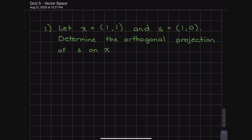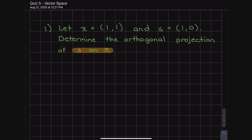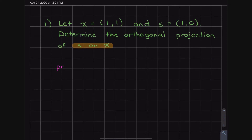This quiz is relatively short — only two examples. The first one: let x = [1, 1] and s = [1, 0]. Determine the orthogonal projection of s onto x. This is straightforward plugging into the formula, but the trick is always the terminology. It's very important to identify what's being projected onto what. Here it's the projection of s onto x, which means x goes in the denominator and s goes in the numerator of the formula.